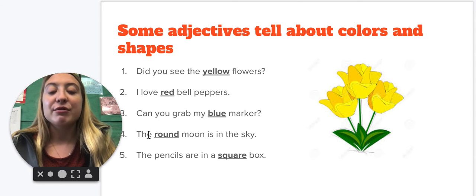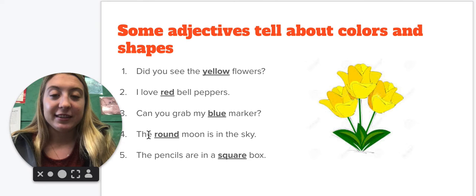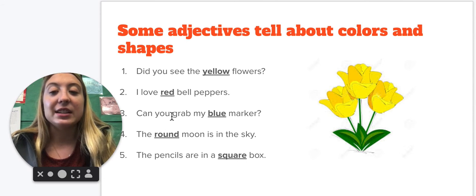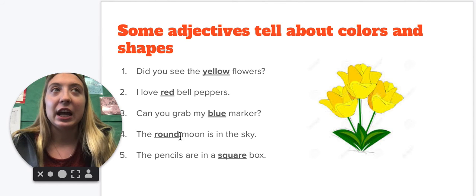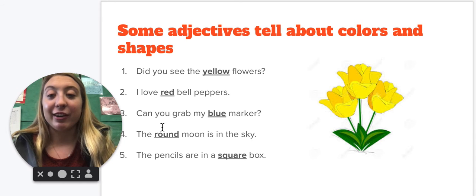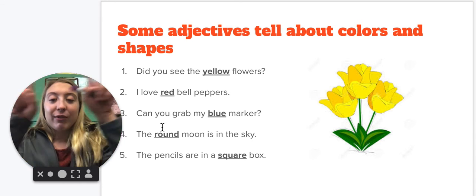The round moon is in the sky. So now moon is my noun, and now round is describing the moon. I could have said a square moon, but that wouldn't be very accurate, right? Because the moon is just, it's a round. It's a circle.